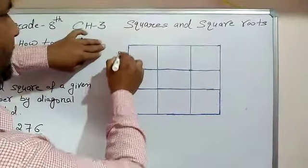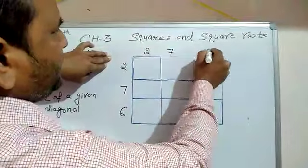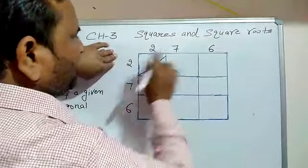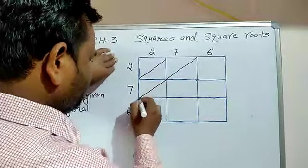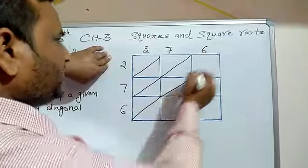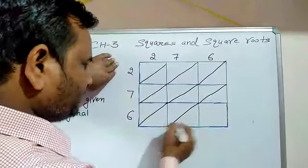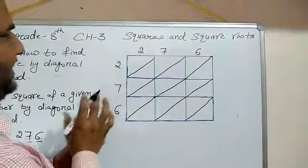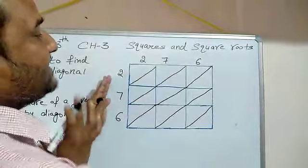First, we write the number 276 to the left side as well as to the right side. Then we join all the diagonals — this is the diagonal of this square, this is the diagonal of this square — and so on for each square. We join all our diagonals. Now, each digit on the left side shall be multiplied by each digit on the right side.